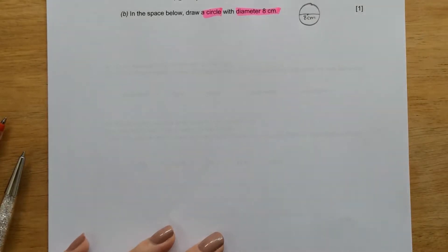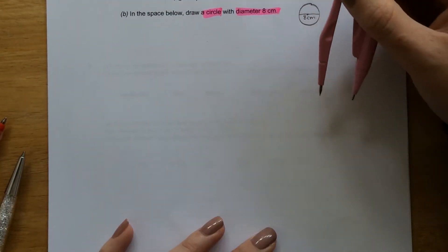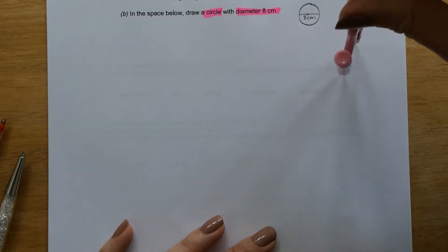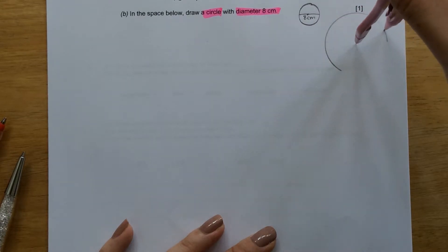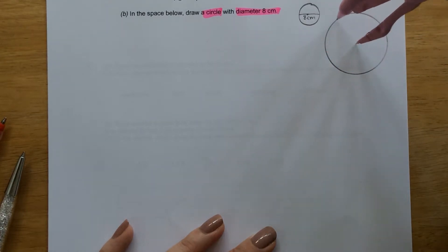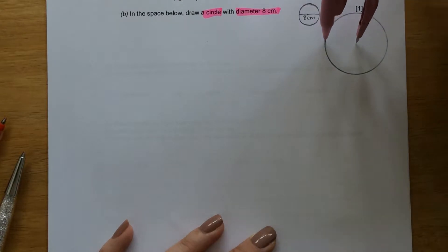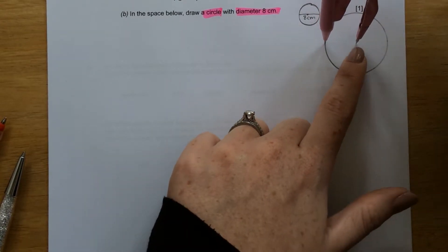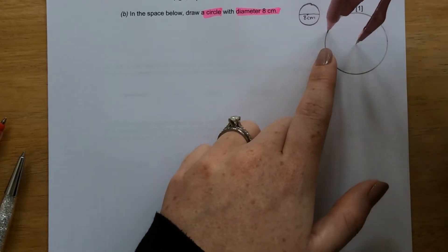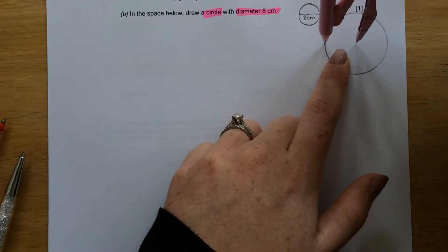I need to draw this accurately using a compass. So what you'll notice is, when I draw this circle with a compass, my compass point is the centre of the circle. And my pencil is drawing the circumference, the outside of the circle.